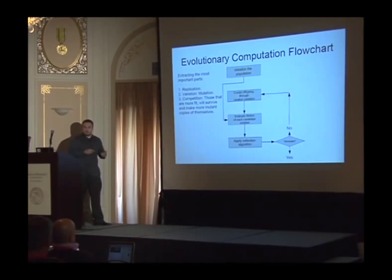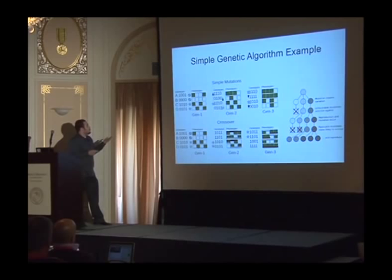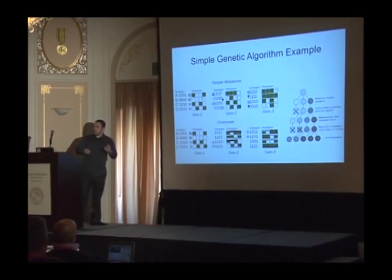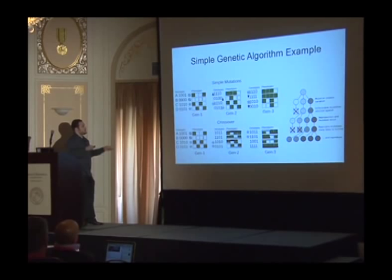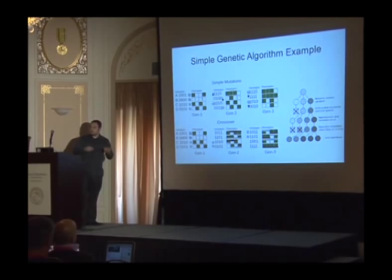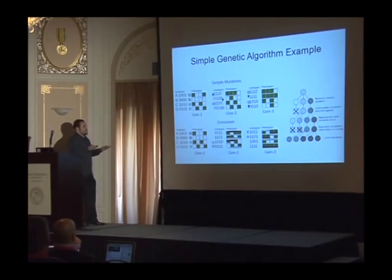Evolutionary computation is applied to a particular genotype — in biological organisms, that's DNA. Here, for example, we have a string of genes of ones and zeros as the genotype, and the phenotype it represents is some structure. If the goal is to blend into a green environment, then a simple mutation in a genetic algorithm starts with four agents, calculates how much green they have, selects the ones with two greens, perturbs bits to create offspring, and eventually produces a very fit agent that's completely green.